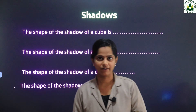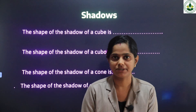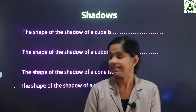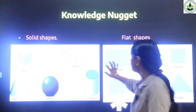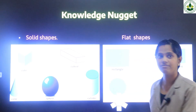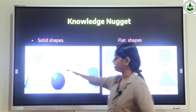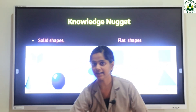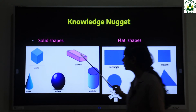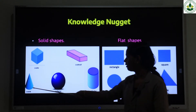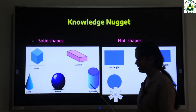Our first chapter is over. You must study this chapter. Let us revise what we learned. First, we discussed solid shapes. These are the solid shapes: cube, cuboid, cone, sphere, and cylinder.